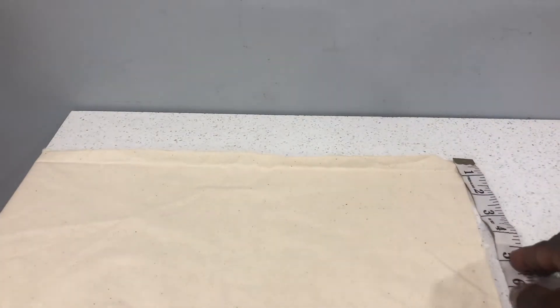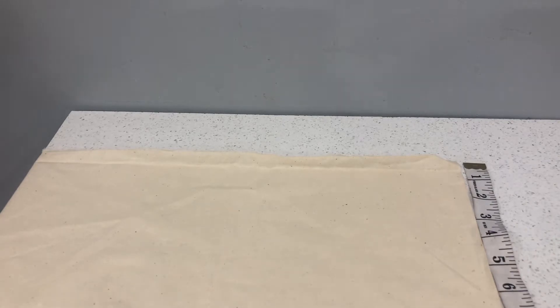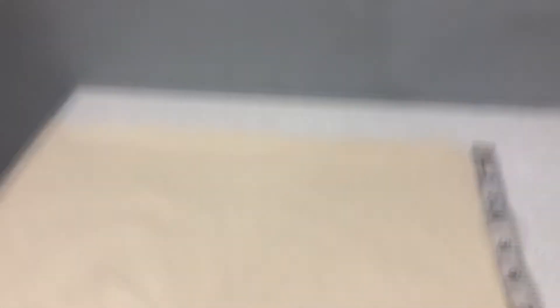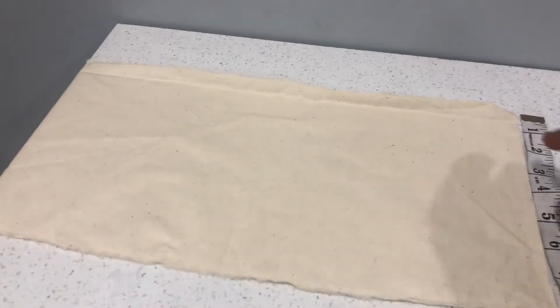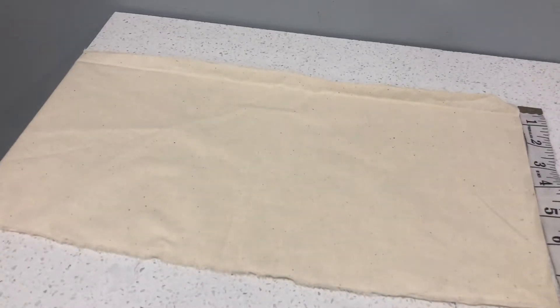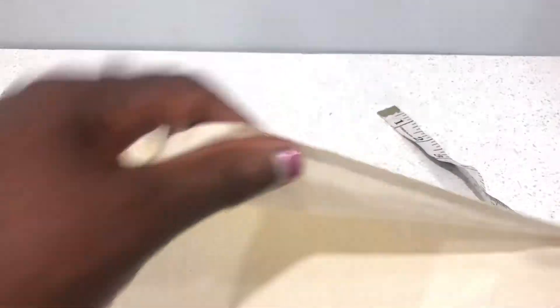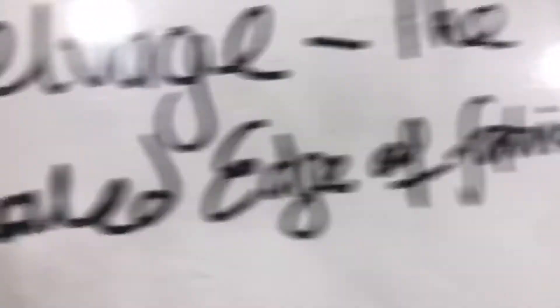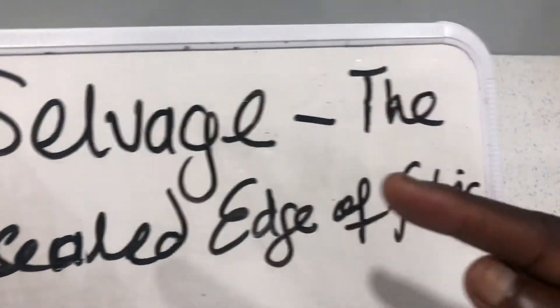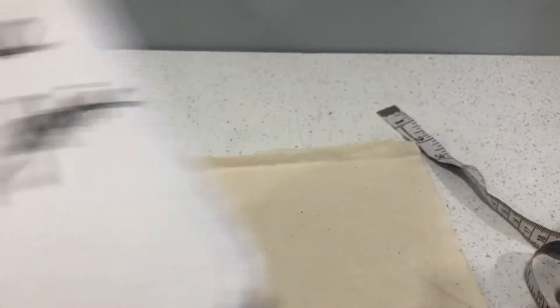So let's say you want to cut an 8 by 8, and I know for a fact that this is 8 inches long. Let me show you—this side is actually called a selvage, the part of the fabric that is sealed. The selvage is the sealed edge of the fabric. If you try to pull thread there, nothing comes.